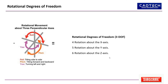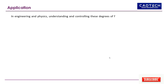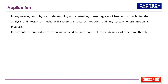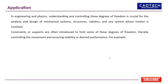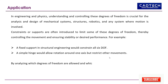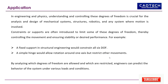Applications in Engineering and Physics: understanding and controlling these degrees of freedom is crucial for the analysis and design of mechanical systems, structures, robotics, and any system where motion is involved. Constraints or supports are often introduced to limit some of these degrees of freedom, thereby controlling movement and ensuring stability or desired performance. For example, a fixed support in structural engineering would constrain all six DOF, while a simple hinge would allow rotation around one axis but restrict other movements. By analyzing which degrees of freedom are allowed and which are restricted, engineers can predict the behavior of the system under various loads and conditions.